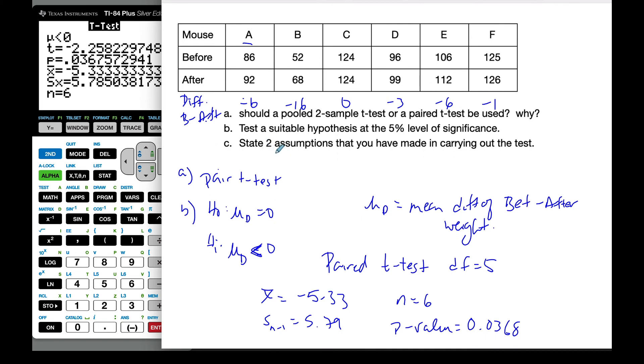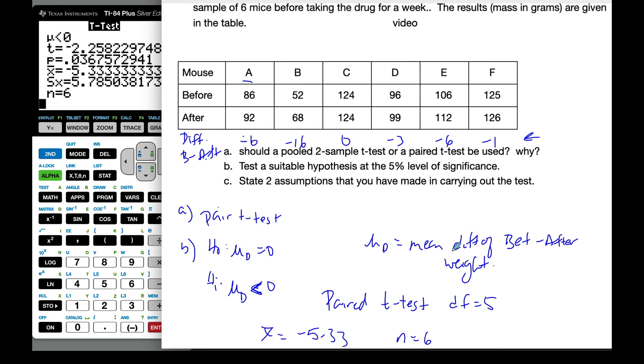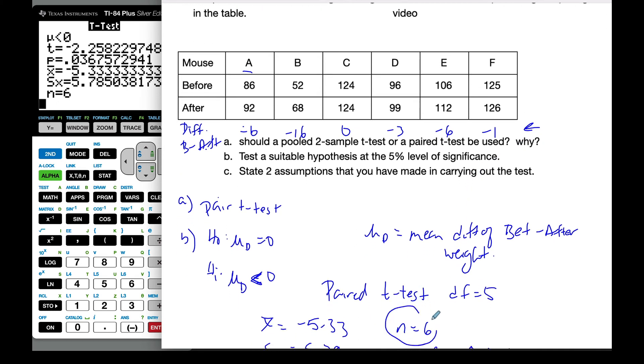State two assumptions that we made in carrying out the test. Well, the two assumptions are I carried out a t-test and my n is 6, which is significantly less than 30. So this doesn't make the central limit theorem. So I must assume that the population of difference follows a normal distribution. I don't know if that's true, but I'm assuming that.